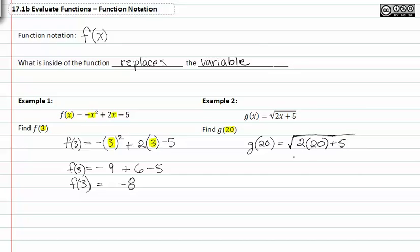I find it helpful on occasion to just write the parentheses first and leave that empty space until the end and then substitute the value in. Now I'm going to evaluate my function g of twenty. This gives me forty plus five or g of twenty is equal to the square root of forty five.